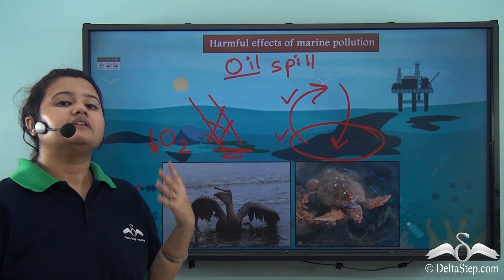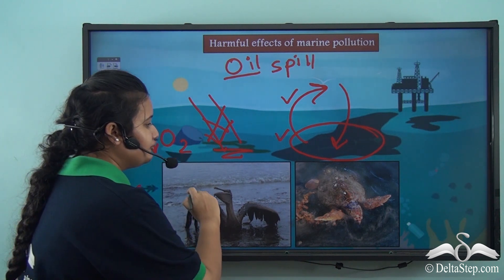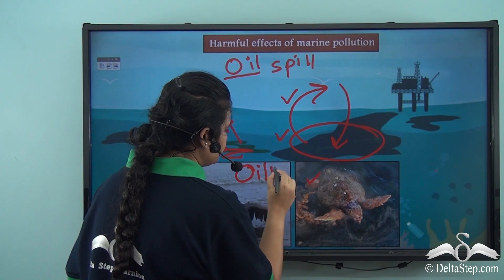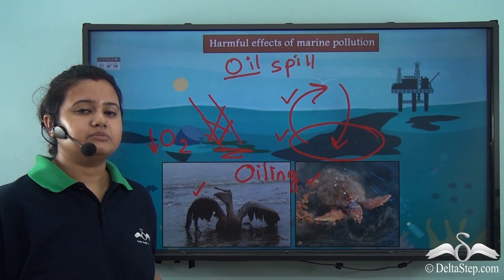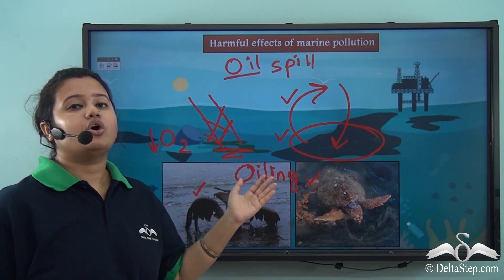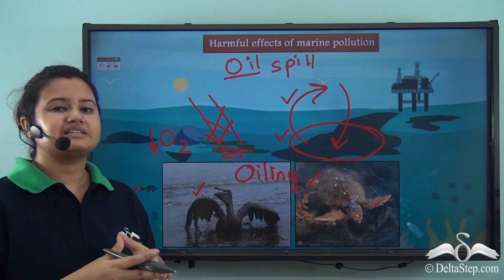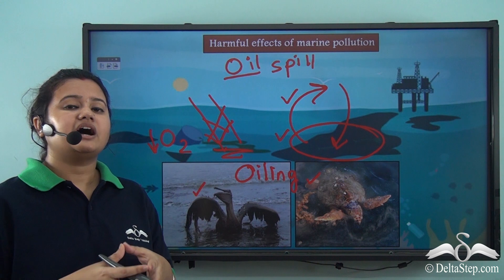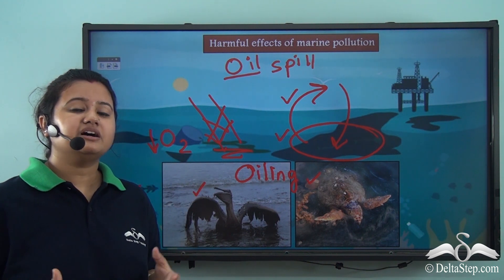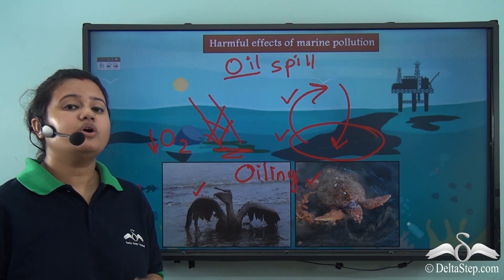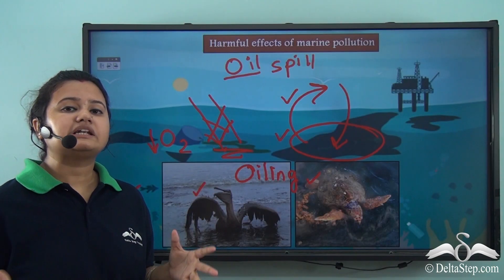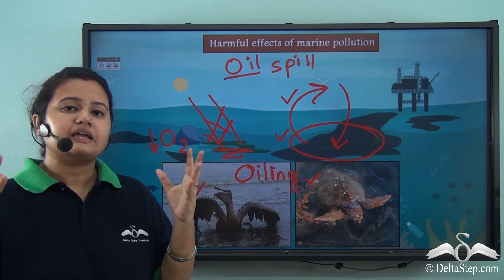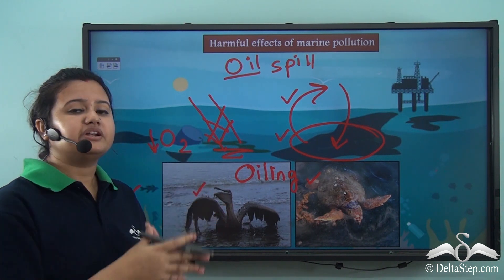Oil spill also physically harms aquatic life because oil coats the wings and skin of marine animals — this is known as oiling. Due to excessive oiling, these animals cannot perform basic activities like flying or swimming. Furthermore, oil contains various toxic chemicals which marine animals unwillingly intake, affecting their internal organs and leading to massive death of marine animals. The fertility rate of these animals also gets affected due to oil spill.